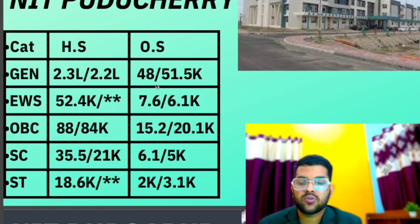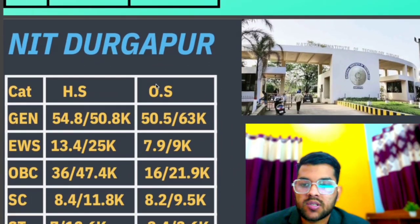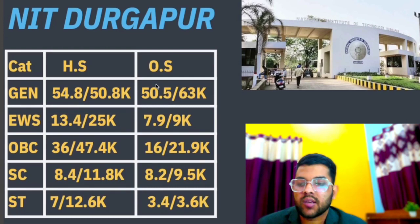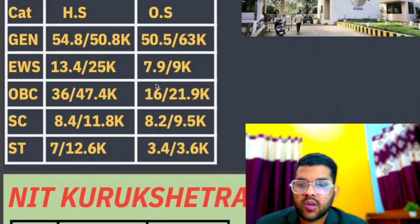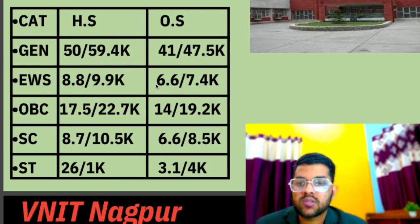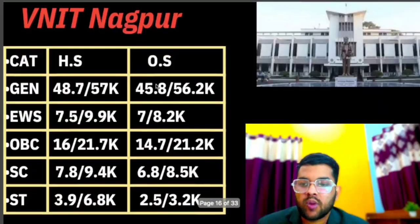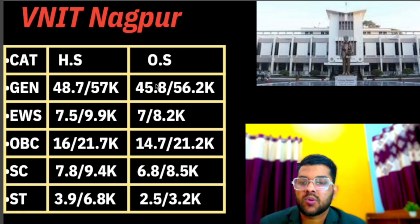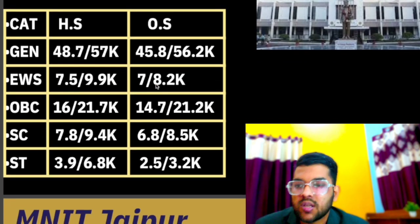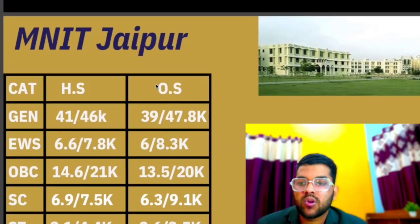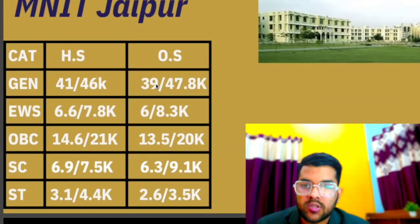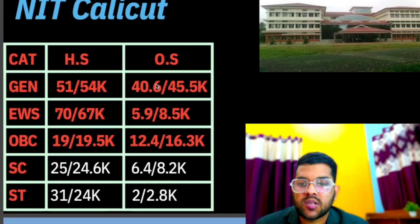For NIT Nagaland: general 57,300, EWS 8,500, OBC 16,700, SC 8,100. For NIT Meghalaya: general 51,000, EWS 7,700, OBC 15,300, SC 7,300, ST 2,400. For NIT Puducherry: general 48,000, EWS 7,600, OBC 15,200, SC 6,100, ST 2,000 — for other state male. For NIT Durgapur: general 50,500, EWS 7,900, OBC 16,000, SC 8,200, ST 3,400. For NIT Kurukshetra: general 41,000, EWS 6,600, OBC 14,000, SC 6,600, ST 3,100. For VNIT Nagpur: general 45,800, EWS 7,000, OBC 14,700, SC 6,800, ST 2,500. For MNIT Jaipur: general 39,000, EWS 6,000, OBC 13,500, SC 6,300, ST 2,600.